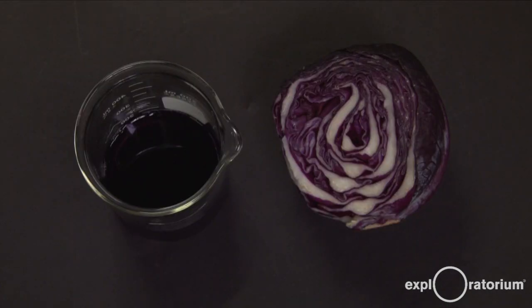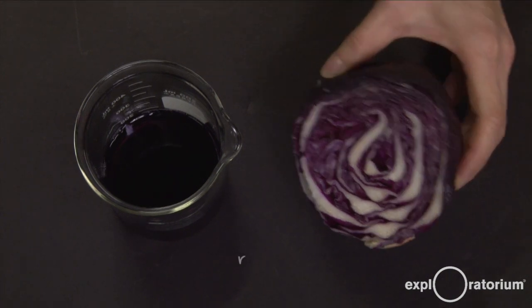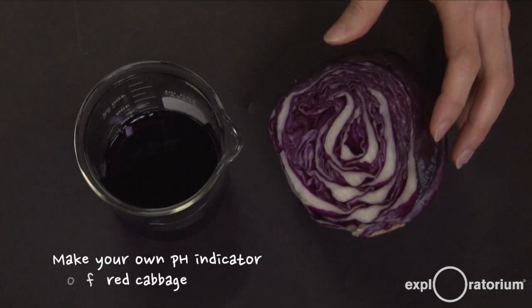To help you really explore what's going on, it's nice to have a pH indicator, which is something that tells you whether a solution is an acid or base. My favorite one is to make my own out of a red or purple cabbage.